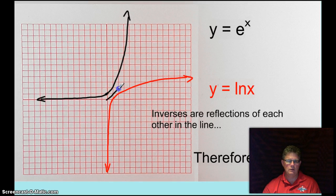the line Y equals X. So in that line Y equals X these two inverses are a reflection of each other. So therefore since inverses are reflections of each other in the line Y equals X, therefore